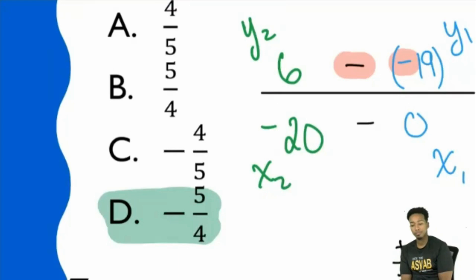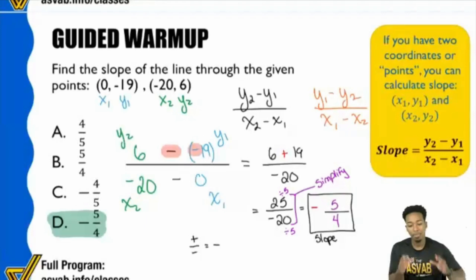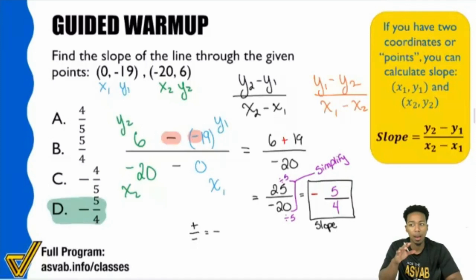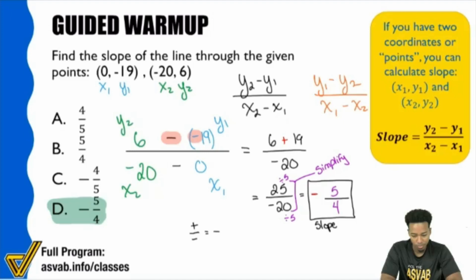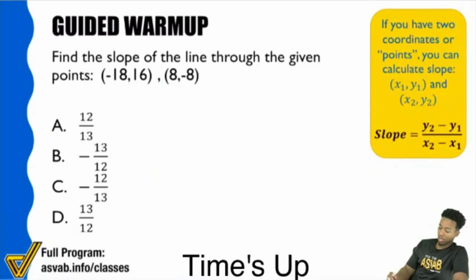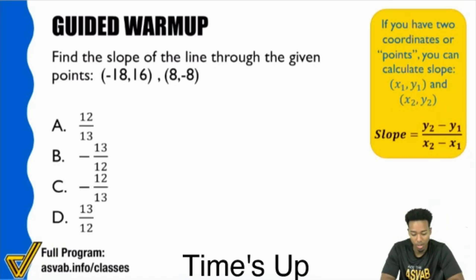Let's move to the next guided warm-up. I'm going to set a timer for about a minute and a half. All I want you to do is set up the slope formula — that's it. Find the slope of the line through the given points: (-18, 16) and (8, -8). Get the setup done. There's your formula on the board.